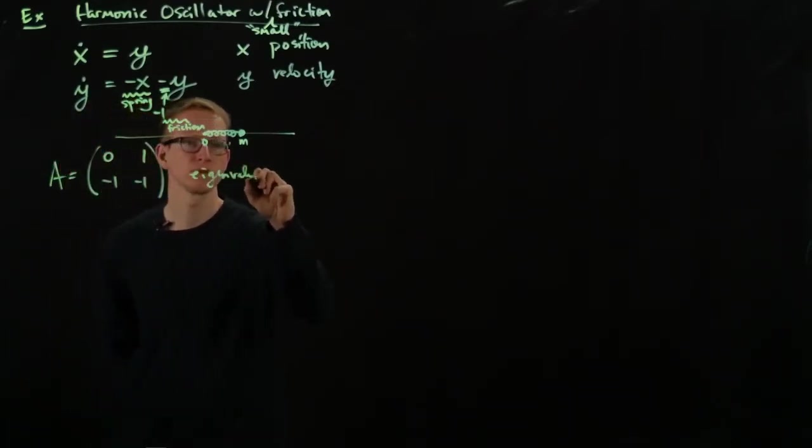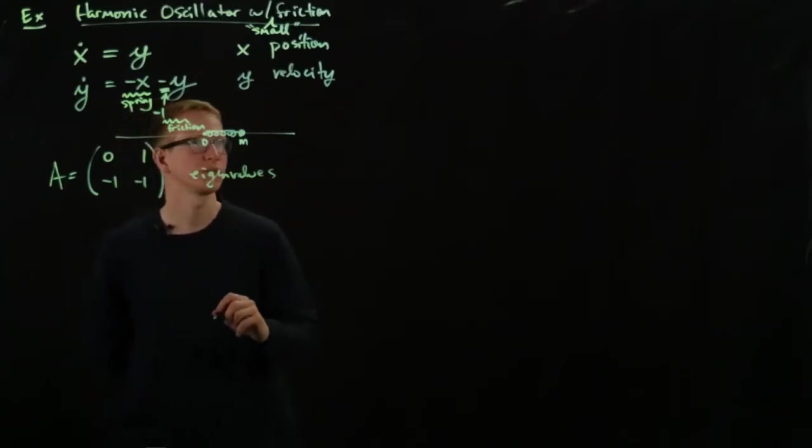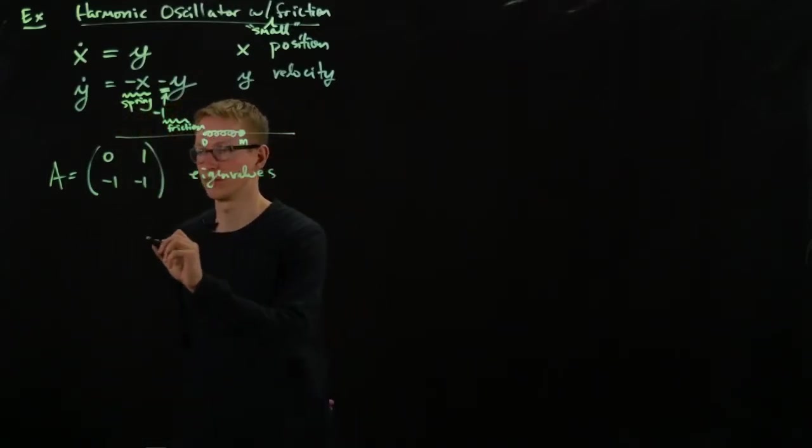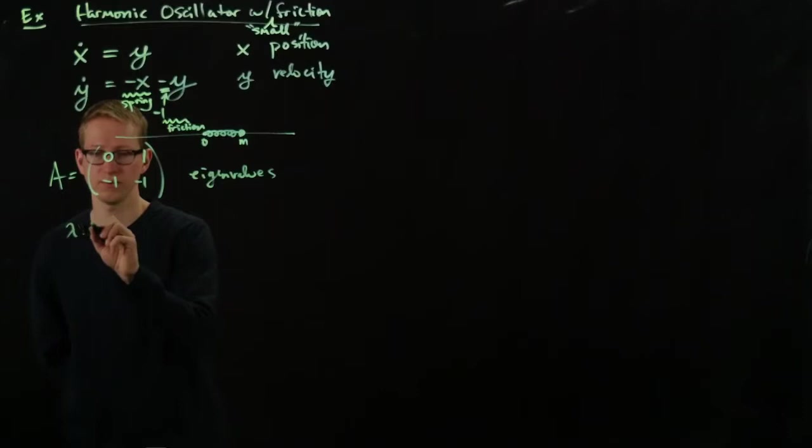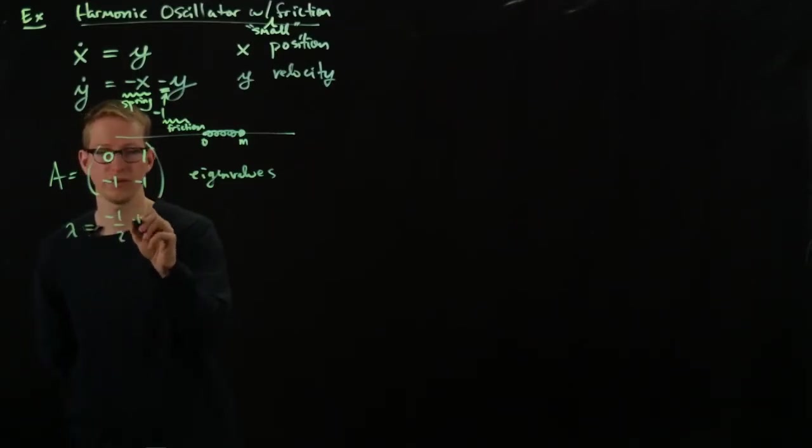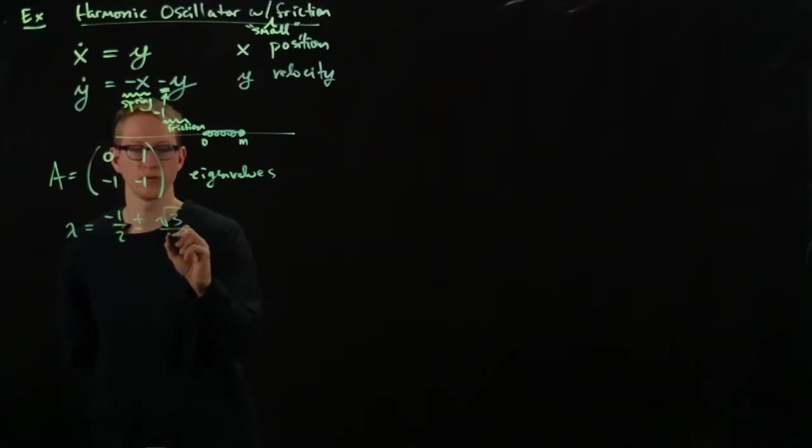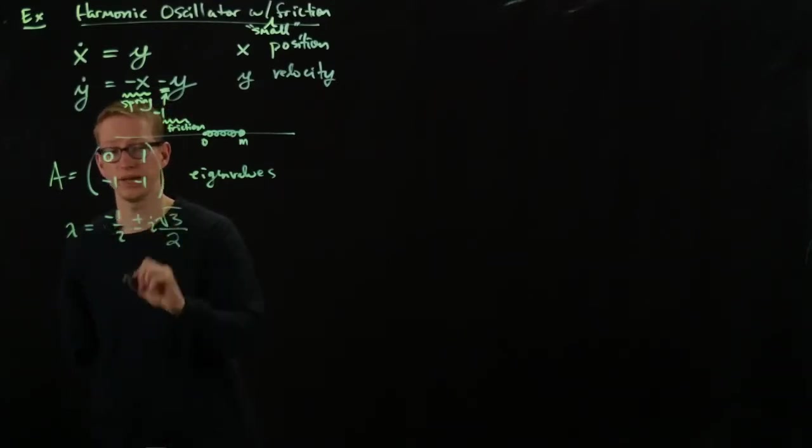And the eigenvalues, unfortunately these eigenvalues are not so simple. I didn't choose the simplest of numbers. But they're given by negative 1 half plus or minus square root of 3 over 2 multiplied by i.